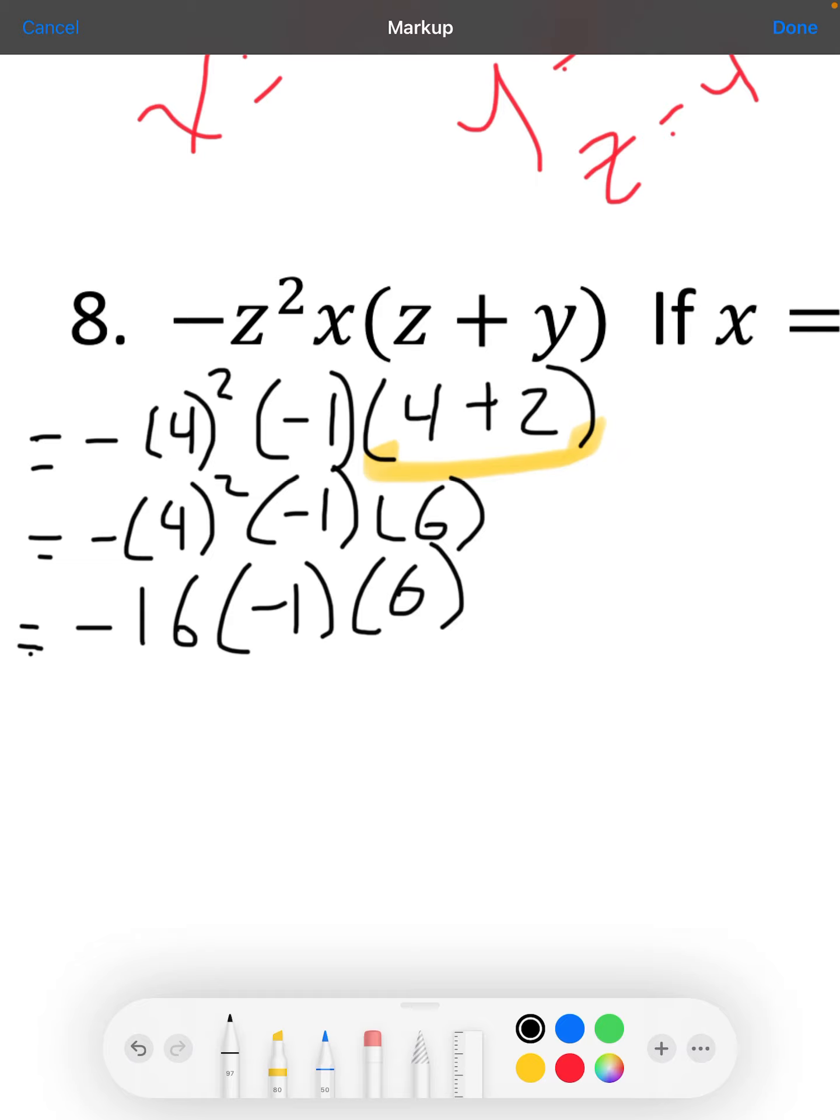Then I'm going to keep going: times negative 1 times 6. Now I just need to do multiplication from left to right because there is no division. Negative 16 times negative 1 is 16, times 6. And 16 times 6 is 96.